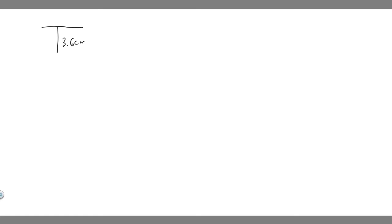Let's go ahead and solve this problem first by drawing what's going on. We have this fish that's hanging, and it's going to be hanging 3.6 centimeters from something. Its mass is going to be 2.4 kg — I'm just going to draw a box to represent the fish. So this is what we're told.